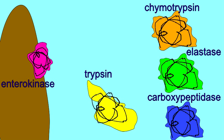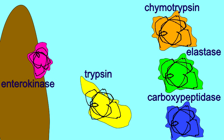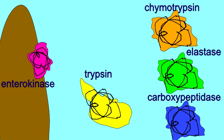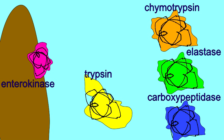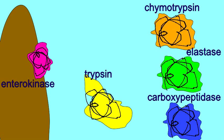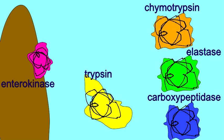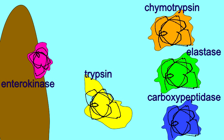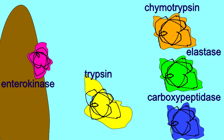The activation of these enzymes which digest protein occurs in two steps. First, the activation of trypsin by enterokinase, and then the activation by trypsin of other enzymes such as chymotrypsin, elastase, and carboxypeptidase.